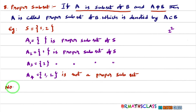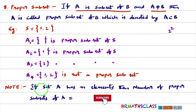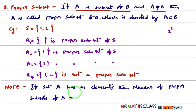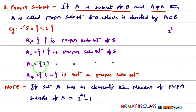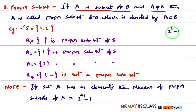Important note related to proper subset: if set A has M elements, then the number of proper subsets of A is 2^M − 1. Observe: for set S with 2 elements, total subsets = 2² = 4, minus 1 = 3 proper subsets. So if set A has M elements, the number of proper subsets equals 2^M − 1.